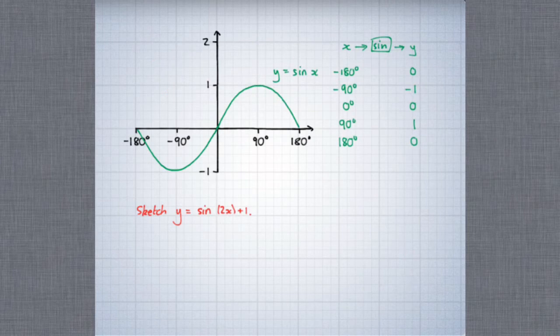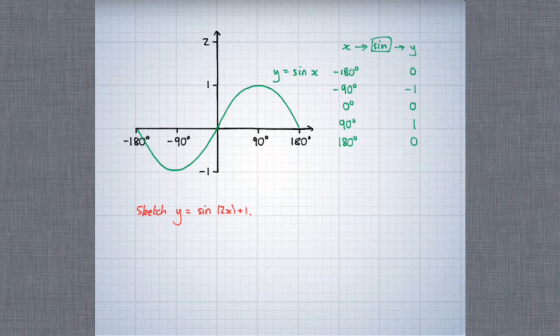Here's my second example. This time we're going to draw the graph of y equals sine 2x plus 1, by starting with the graph of y equals sine x and transforming that. Again, we need to draw a function diagram. So this time, starting with x, the first thing that happens is it's doubled.